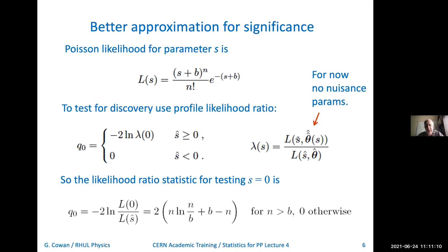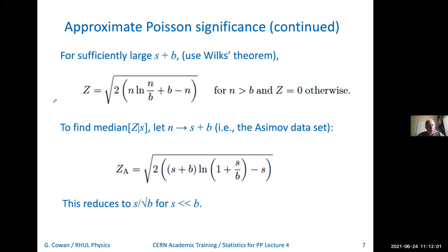Lambda here is the profile likelihood ratio — it's the likelihood of the hypothesized s divided by the maximum of the likelihood. For now, I'm going to assume that b is known, so there are no nuisance parameters in the problem. It's just L of s divided by L of s-hat. So q0 is given by this quantity. When does s-hat come out positive? It's when n is greater than b. You get this quantity if you plug in the likelihood function from above, and you assign zero if s-hat comes out negative, so n is less than b.